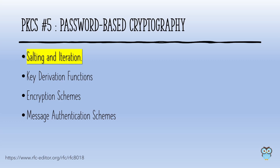PKCS#5 talks about cryptography based on a password. An important point in PKCS#5 is salting and iteration. There was a time when usernames and passwords were stored as plain text in a database. Developers realized this wasn't a good idea, so they started storing the hash of a password using algorithms such as MD5, SHA1, or SHA256. However, hashes of weak passwords could be easily cracked using brute force or dictionary attacks. To prevent this, it is recommended to use a salt — some random data prepended or appended to a password — which produces a different hash and makes attacks more difficult.